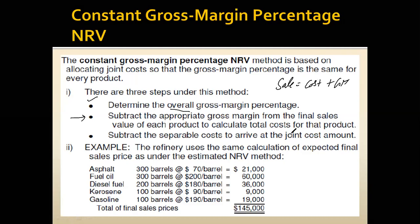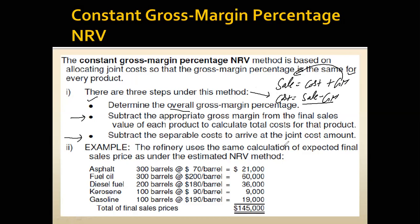We apply this equation on each product individually. We subtract the gross margin from the sales value of each product. So this formula — cost equals sales minus gross margin — we apply individually for each product. This is the second step. You will have better understanding once I apply it.